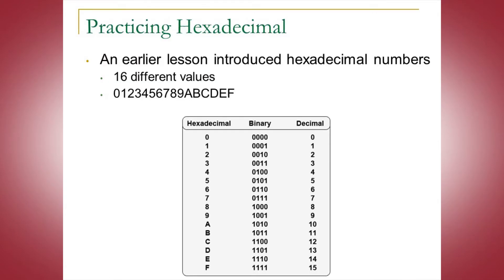In the earlier lesson that introduced hexadecimal numbers, we learned that there are 16 different values in a hexadecimal representation, starting with the number 0 up through 9, and then beginning with the value of 10 in decimal being stored as an A, and the letter F representing the number 15. As you can see on this slide, we have three different conversions of hexadecimal, binary, and decimal for the same specific numbers.